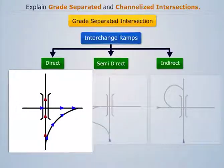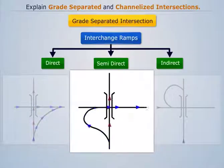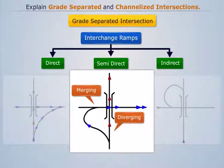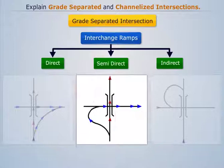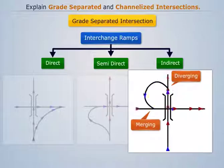The direct interchange ramp involves diverging to the right side and merging from the right. The semi-direct interchange ramp allows diverging to the left but merging from the right side. In the indirect ramp, simple diverging to the left and merging from the left side are involved, which are less hazardous than the former.